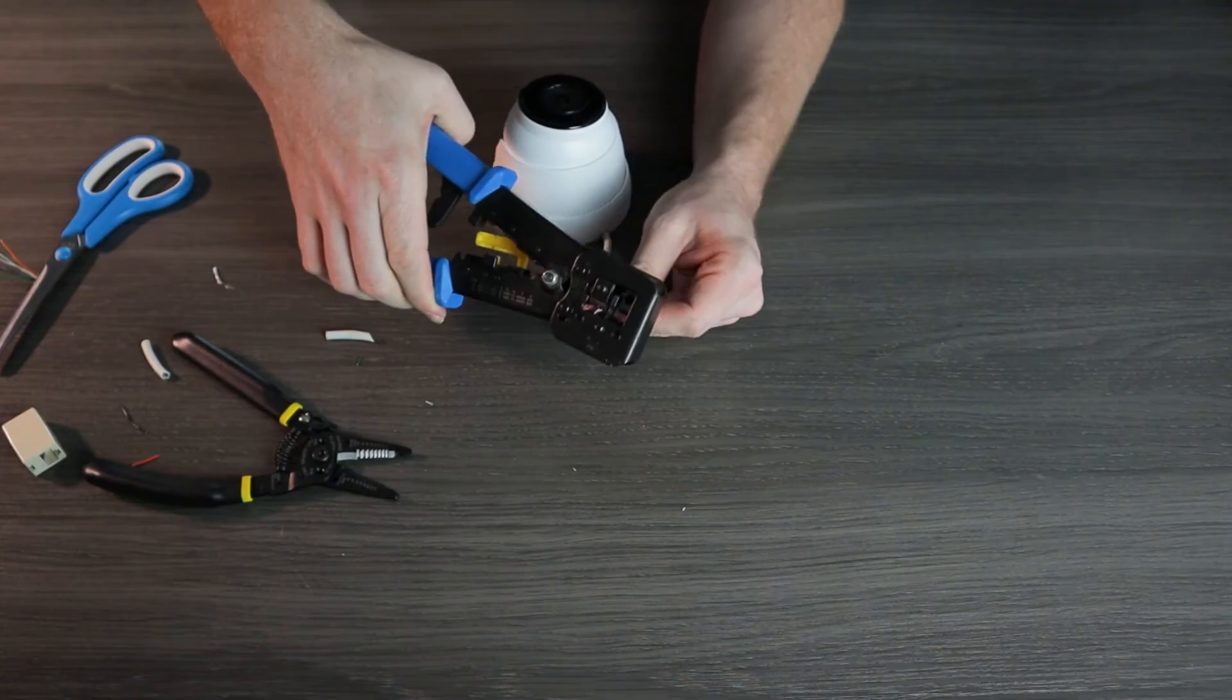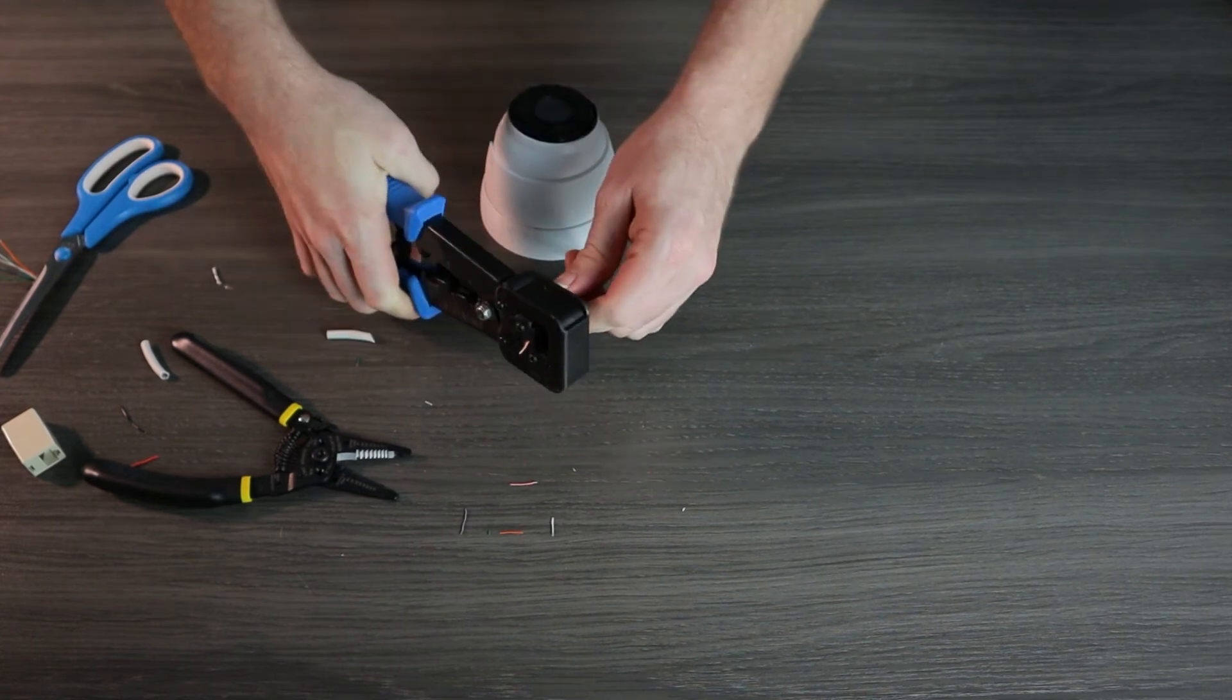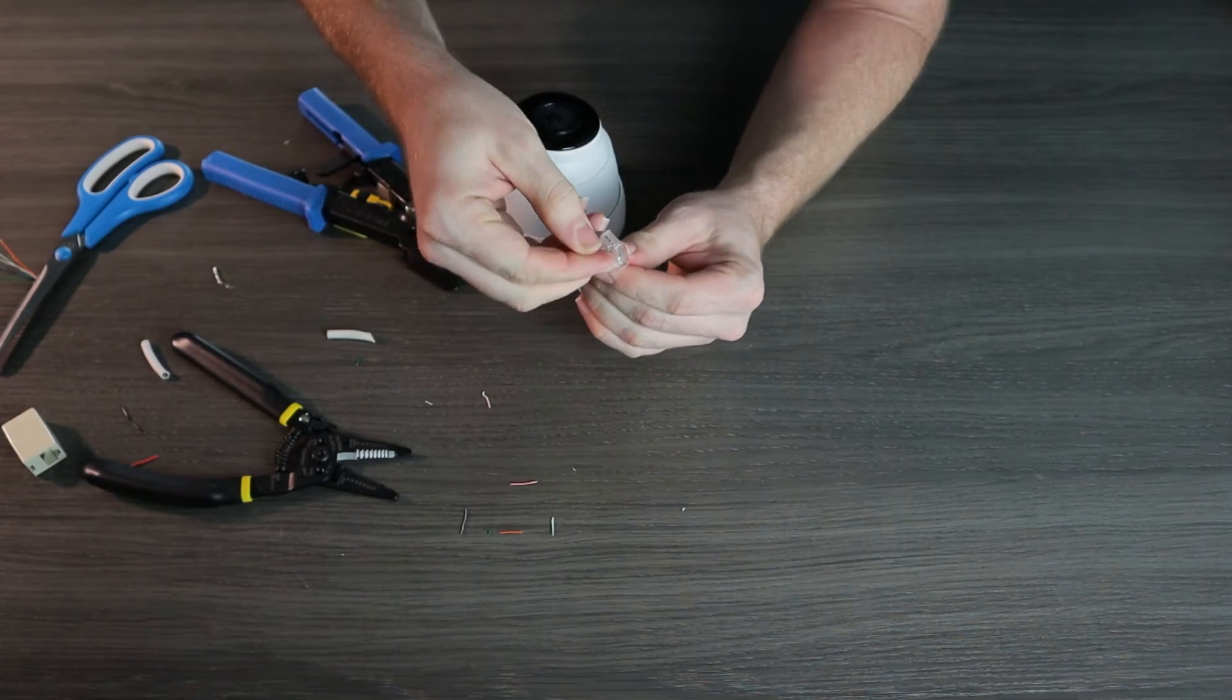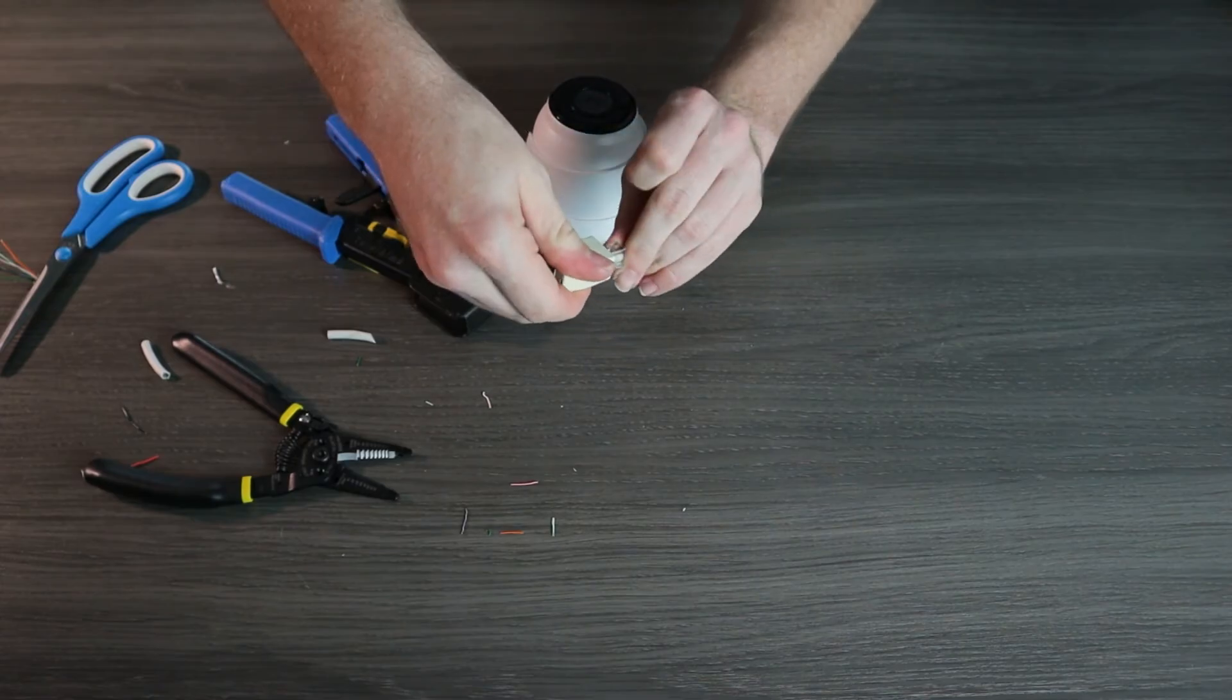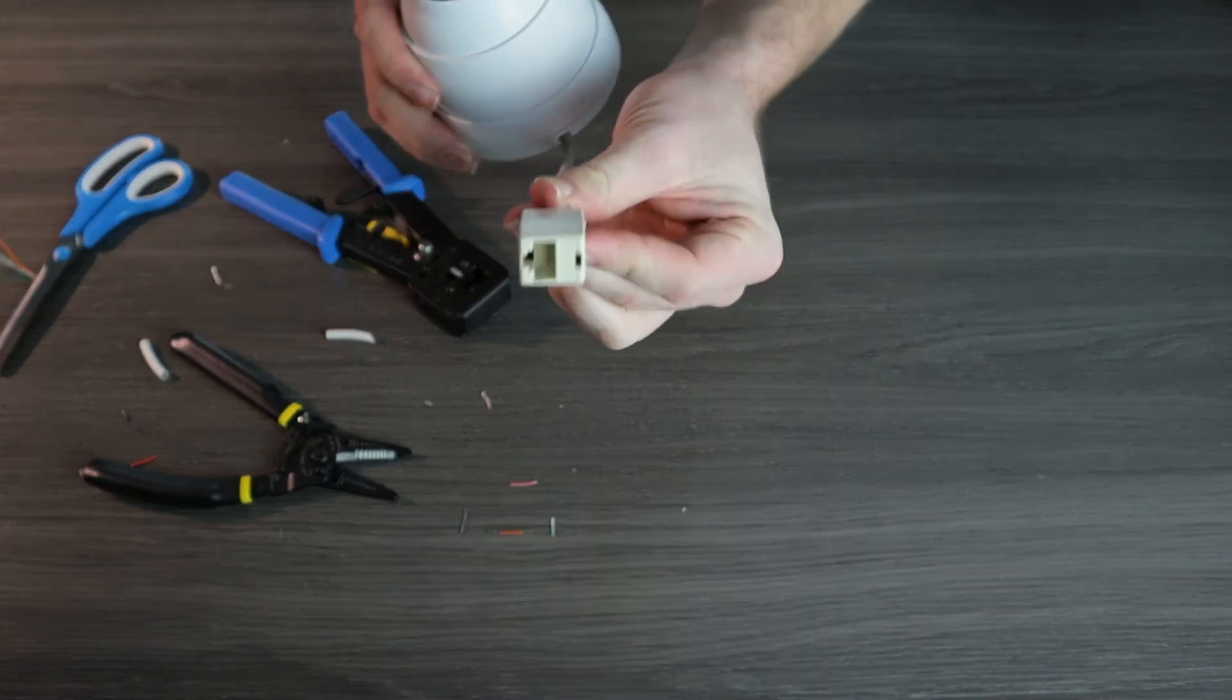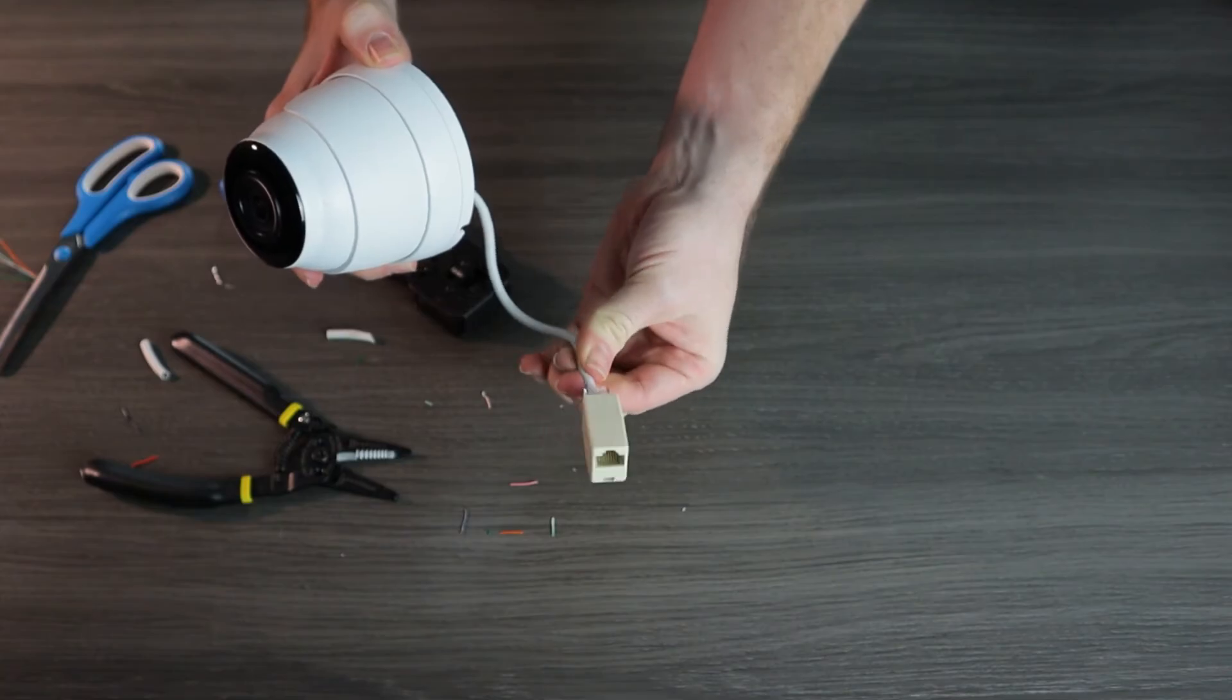Once you have those wires in the right spot, crimp that connector into place. If you've never crimped an ethernet connection before, it's actually pretty easy. We have other videos on our YouTube channel that will help you with this in more detail, and I will leave those links in the description. And there you go. You now essentially have an ethernet cable coming out of your security camera. So go ahead and take your coupler, stick it in there, and you now have your very own makeshift RJ45 connector for your camera.